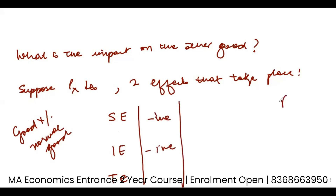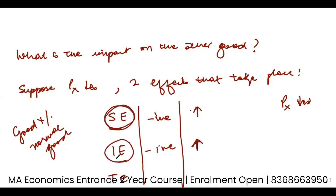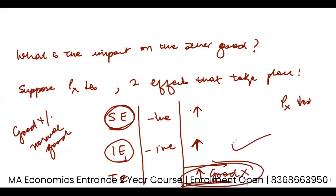When the price of good X decreases, the consumption of good X should increase — this is said by the substitution effect — and the consumption of good X should also increase, as said by the income effect. So both substitution and income effect tell me to increase the consumption of good X, and the total effect is an increase in the consumption of good X. This was clear from the last class.